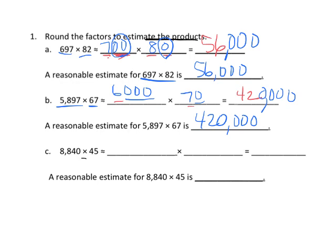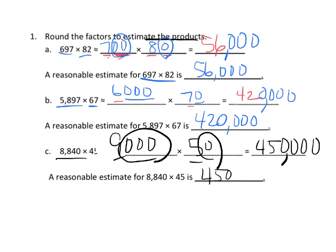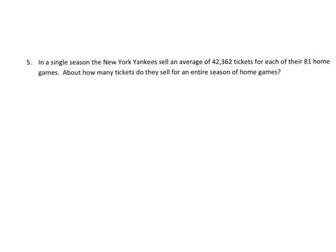Let's do one last one. 8,840 is about 9,000, and 45 is about 50. So 9 times 5 is 45, and then we've got three extra zeros and one extra zero — one, two, three, four extra zeros — so our answer is 450,000.